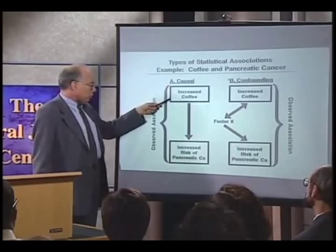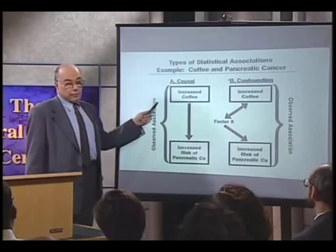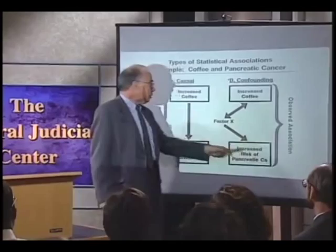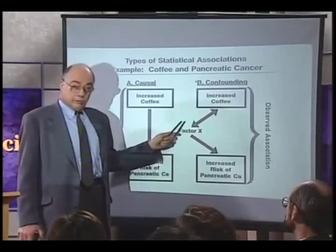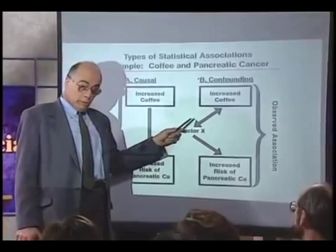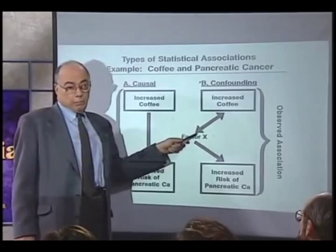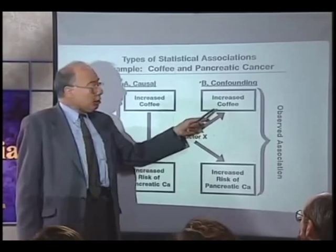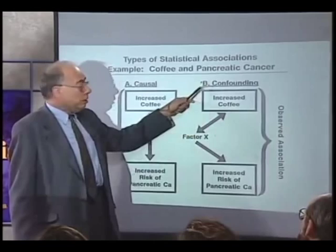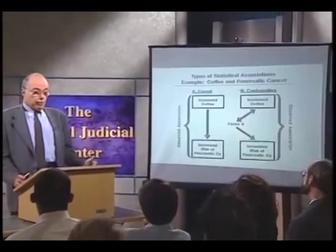What could factor X be? One suggestion was that factor X could be cigarette smoking. Cigarette smoking is known to be a cause of increased risk of cancer of the pancreas. It is also known that you almost never find a cigarette smoker who doesn't drink coffee — there is a close link between cigarette smoking and coffee consumption. So if we observe an increased risk of cancer of the pancreas in people who drink more coffee, it could be not because of a causal relationship, but because both are associated with cigarette smoking. Clearly, the interpretation has major clinical and public health implications depending on which one appears to be correct.